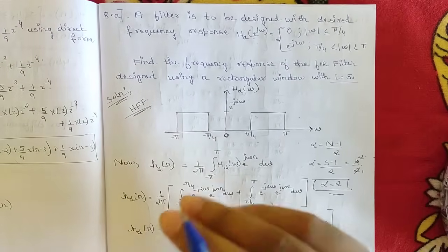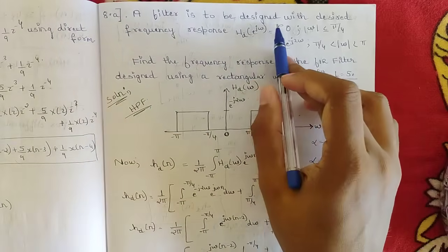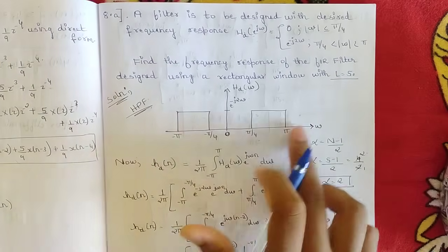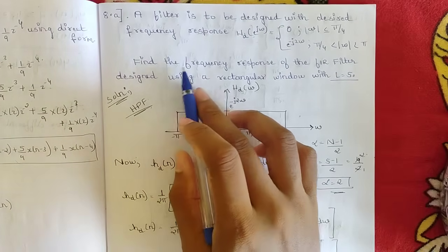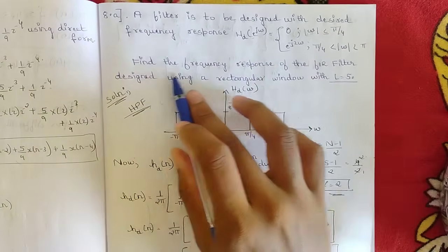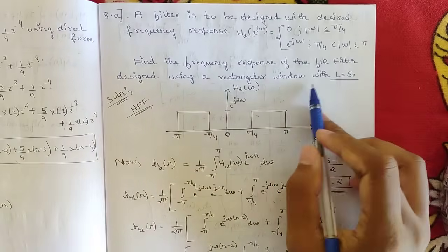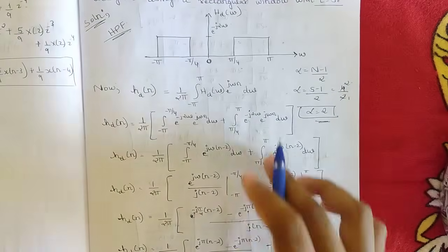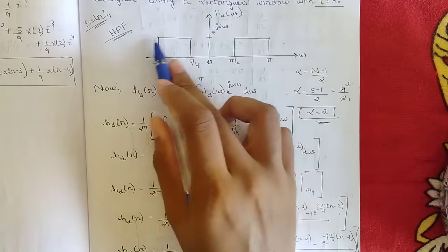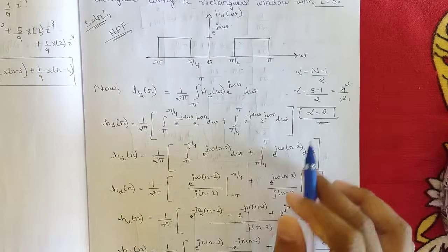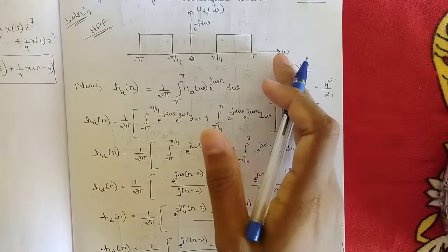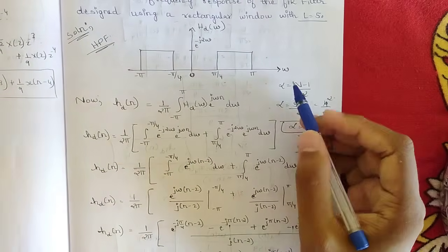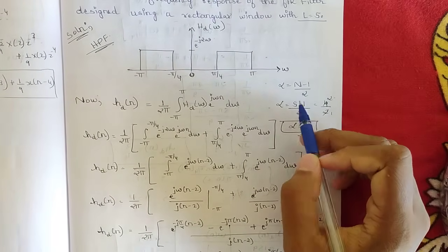Sometimes questions give the desired frequency response without explicitly stating low-pass or high-pass — you must identify it yourself. We analyze this as a high-pass filter. The task is to design the FIR filter and find its frequency response using a rectangular window with length N equal to 5.